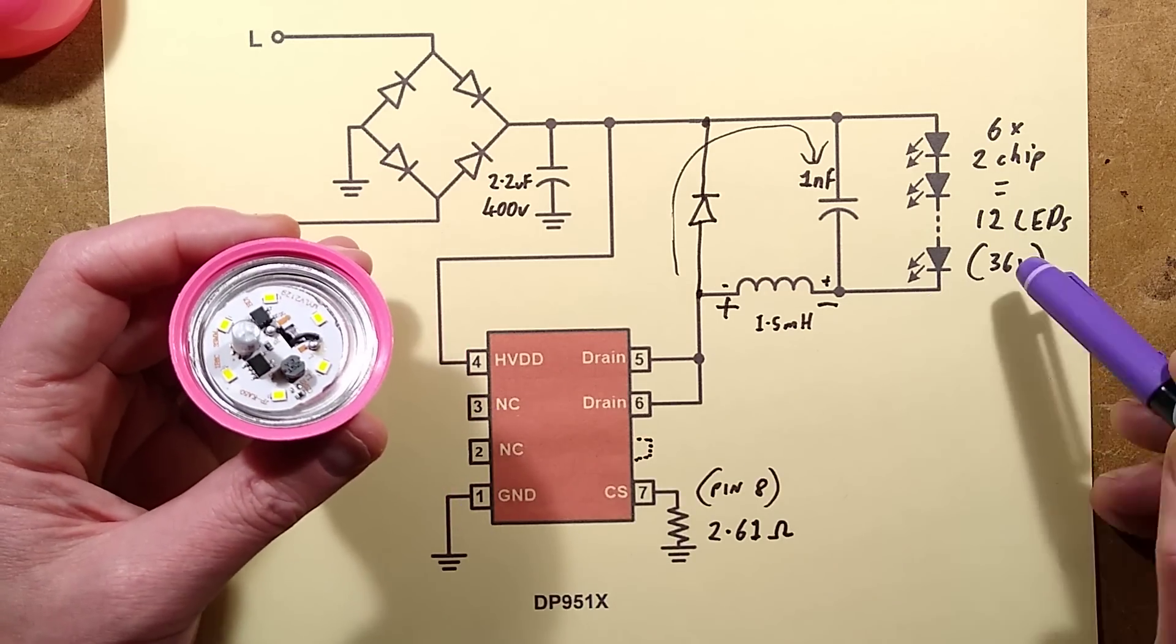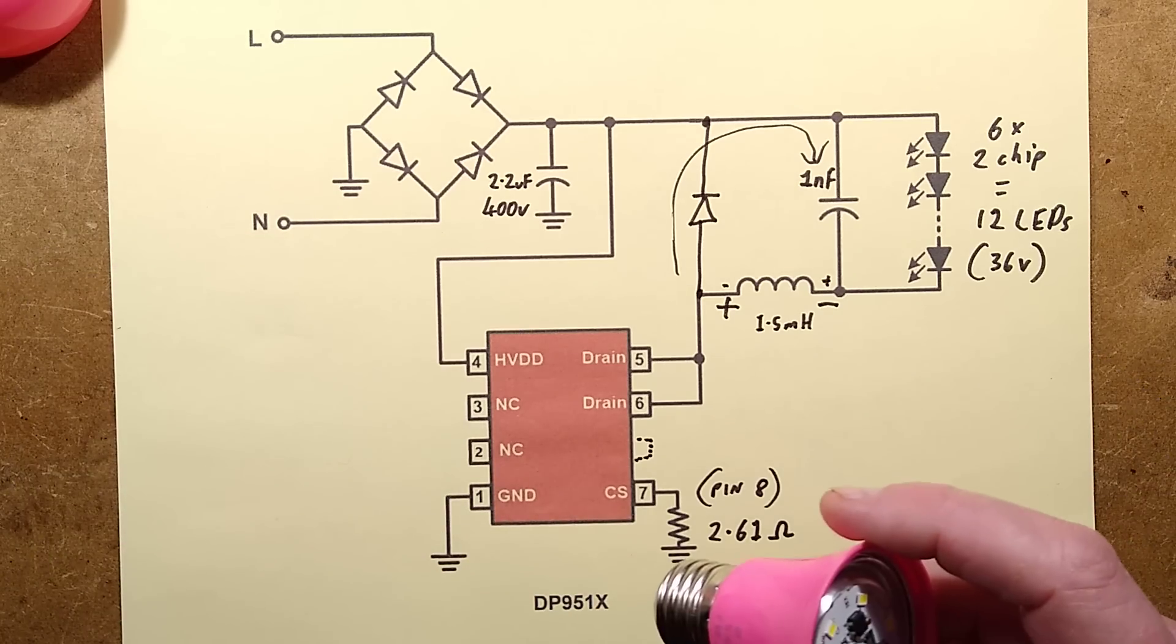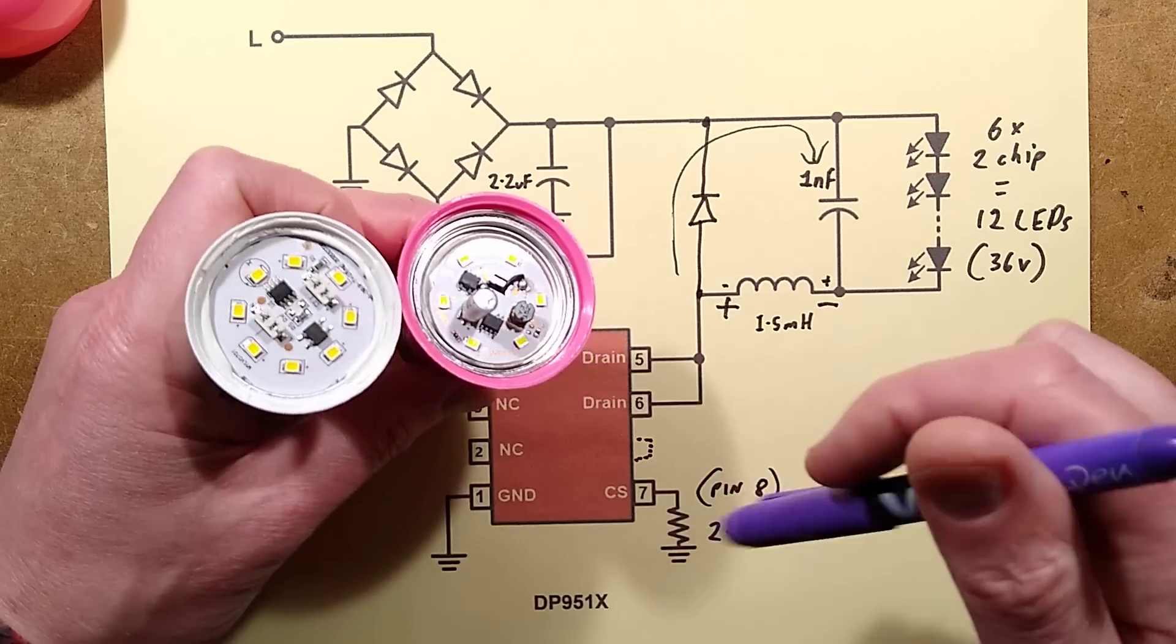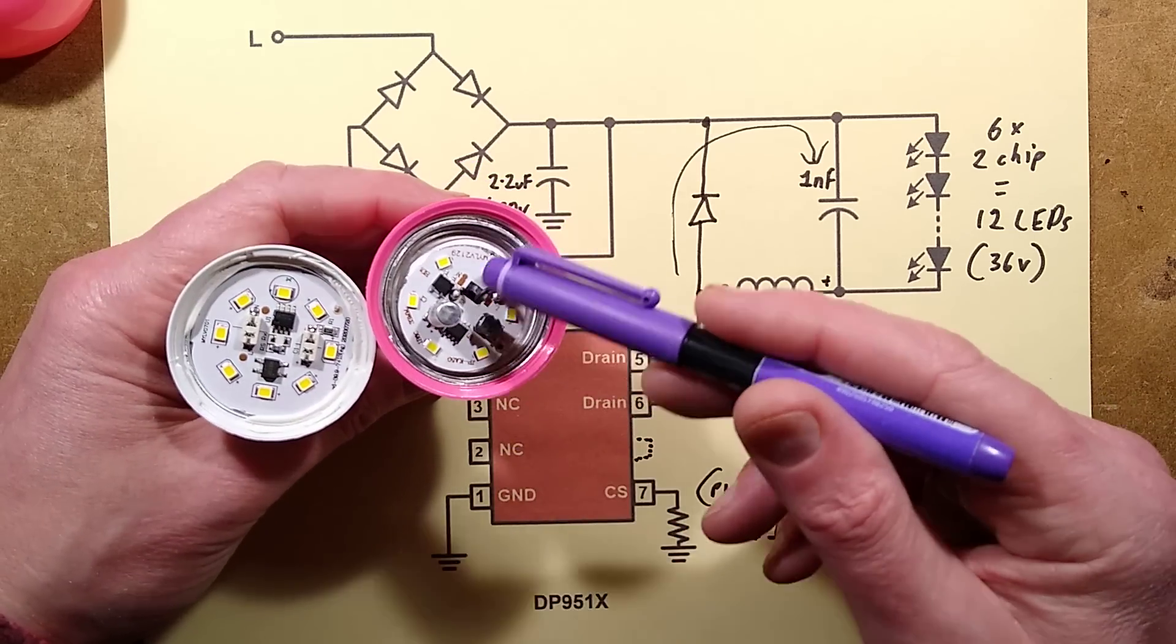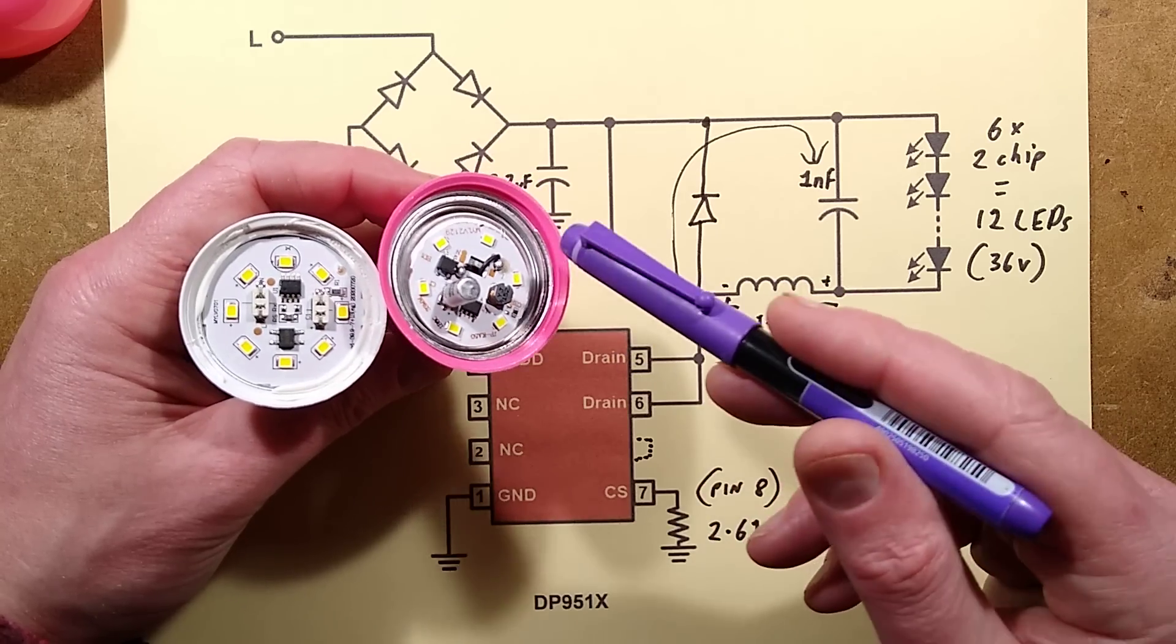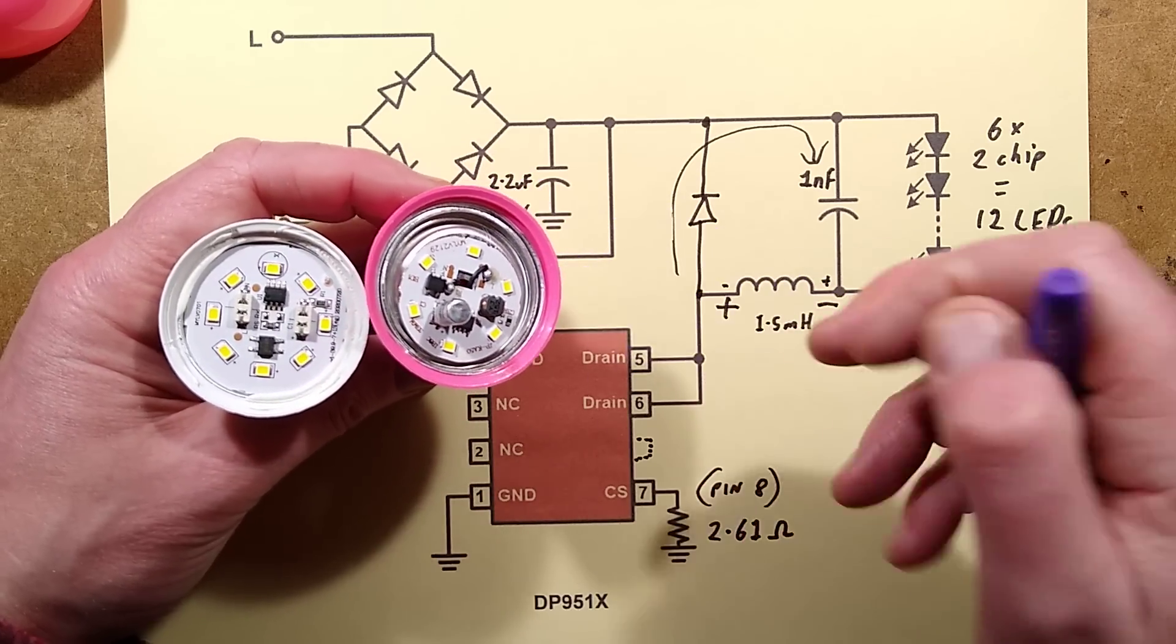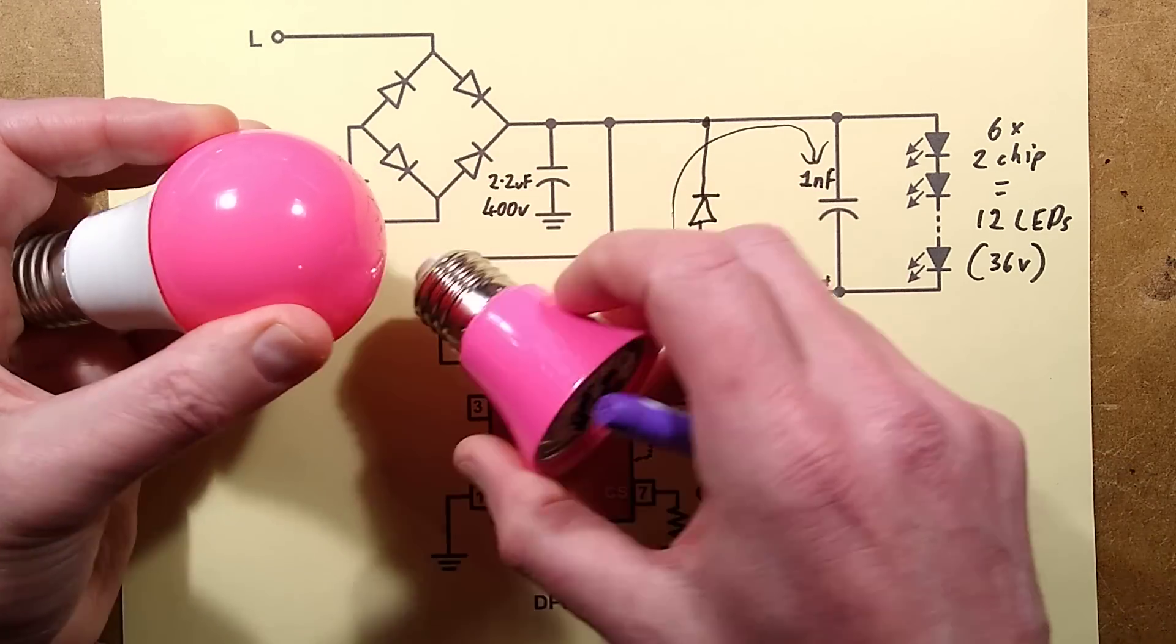The LEDs, there are six LEDs, two chip each, so 36 volts. That differs greatly to the approach taken by many modern lamps where the bulk of the voltage is dropped across the LEDs and then it's a simple linear regulator. That makes me think this is a much older style of circuit and if anything it would be nice to see a more modern approach.